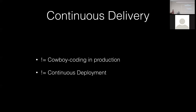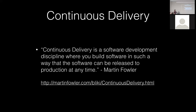Continuous delivery is not quite the same as continuous deployment. Martin Fowler said continuous delivery is a software development discipline where you build software such that it can be released to production at any time. The difference is that continuous deployment means it automatically goes to production as soon as you commit to master, while continuous delivery means every change to source control is stable enough that it could go to production when you're ready — but that final step may not be automated.